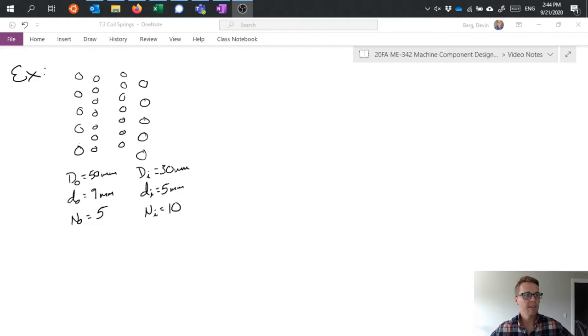We have the criteria given that the outer diameter, major diameter, is 50 millimeters, wire diameter of the outer spring is 9 millimeters, and there are five turns of the spring. For the inner spring, its major diameter is 30 millimeters, wire diameter is 5 millimeters, and it has 10 turns in this case.